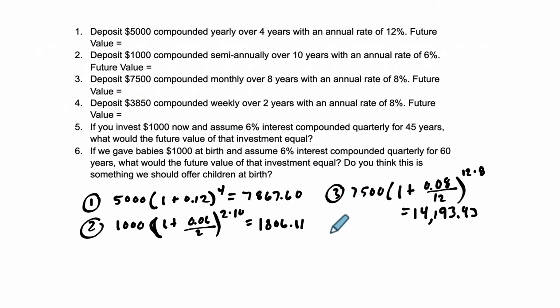Let's go to number four. We deposit $3,850 compounded weekly at 8%, so it's 1.08. Weekly, there are 52 weeks in a year, so it's the 52nd power times 2.